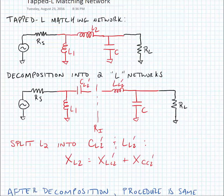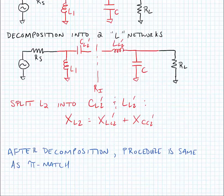We split L2 into two virtual components: CL2 prime and LL2 prime. We enforce the rule that the reactance of the original inductor equals the sum of the reactances of the two new components — XL2 equals XLL2 prime plus XCL2 prime. After the decomposition, the procedure is the same as the pi matching procedure.